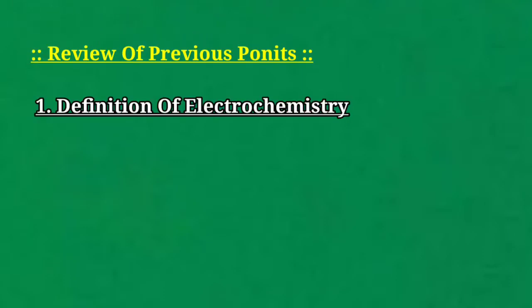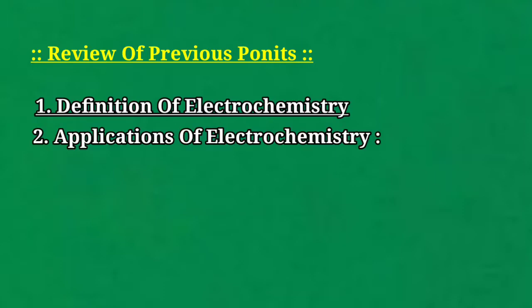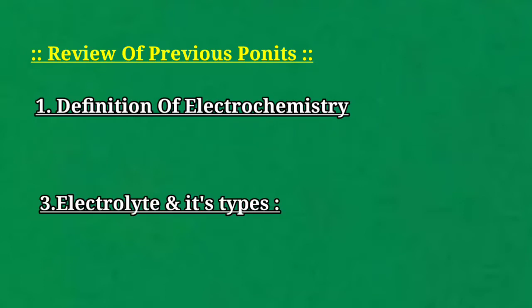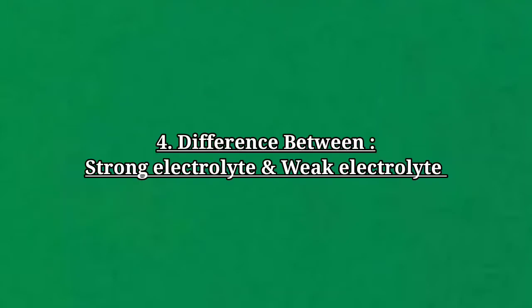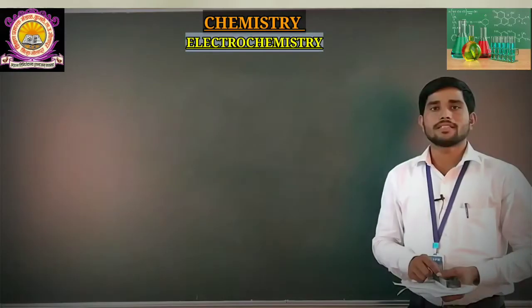The points are: first, what is meant by Electrochemistry; second, the different types of general applications of Electrochemistry; third, what is meant by Electrolytes and its different types; and fourth, the difference between strong electrolytes and weak electrolytes.